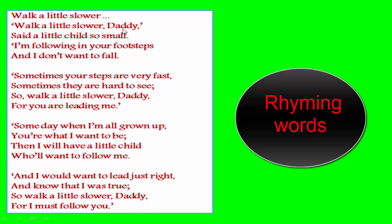Let's take the first four lines. The ending words are daddy, small, footsteps, and fall. Here, small and fall are similar in their ending sounds, so we mark out these two words and get the first rhyming pair from these four lines: small and fall.